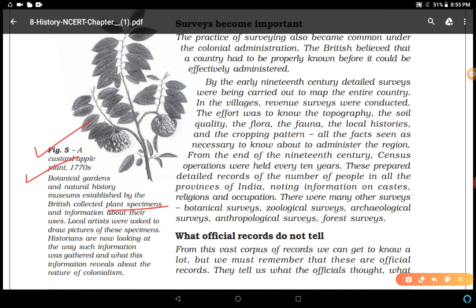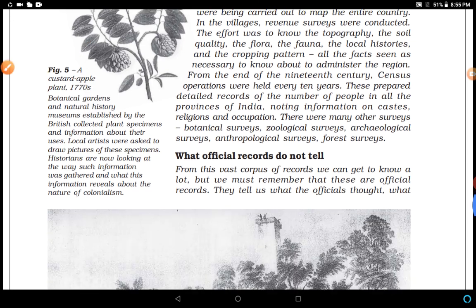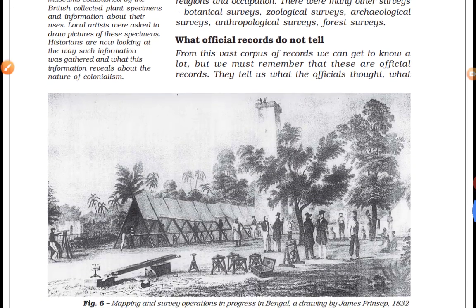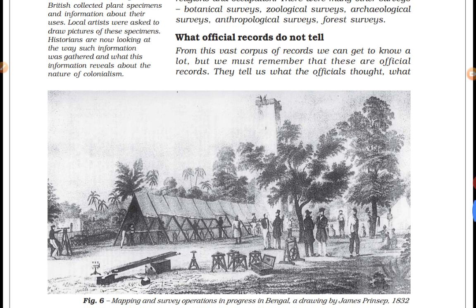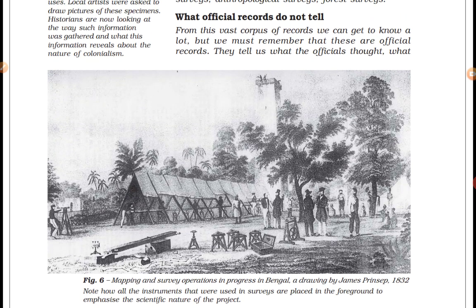The British collected information about plant specimens so that they could easily use them. Local artists were asked to draw pictures of these specimens so they could be identified. Historians are now looking at the way such information was gathered and what it reveals about the nature of colonialism — whatever was beneficial for the British was done. Now after survey, we will study what official records do not tell.